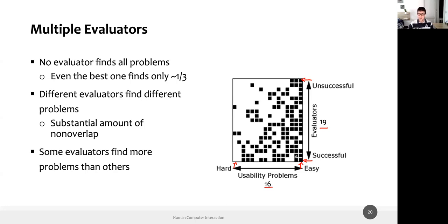Some evaluators found different problems from each other — the first evaluator found some that the second did not, and vice versa. Some harder problems were only found by one or two evaluators. We cannot rely on a single evaluator for this reason, and it's better to combine different evaluators so they can compensate and collectively find the most problems.